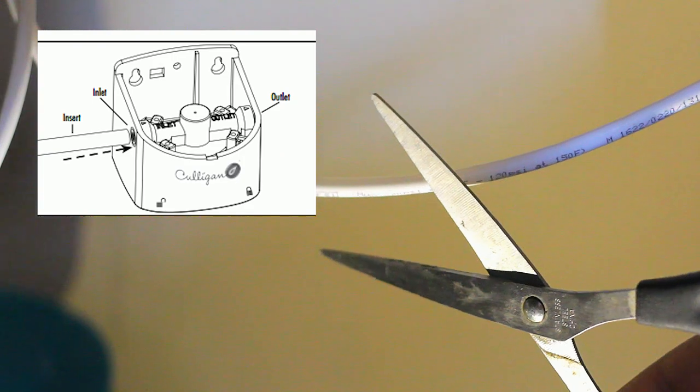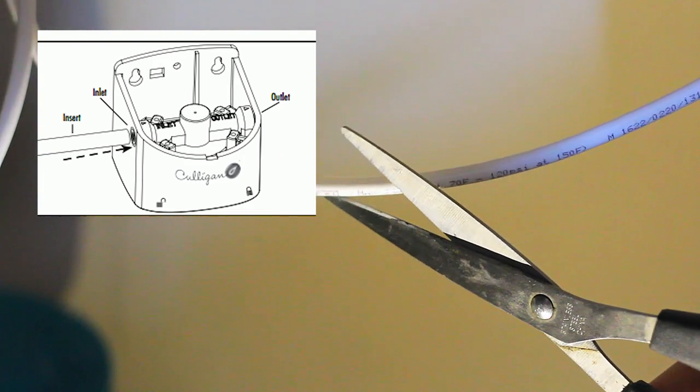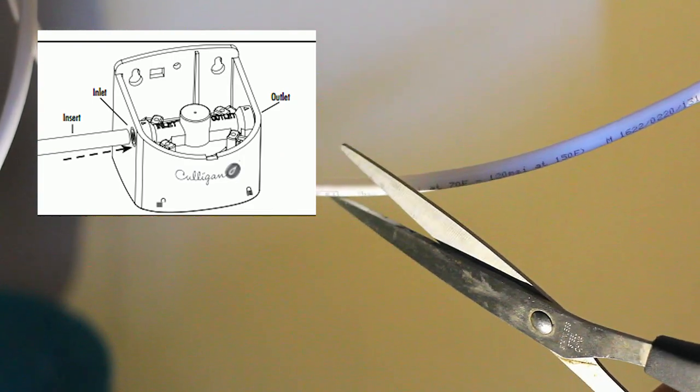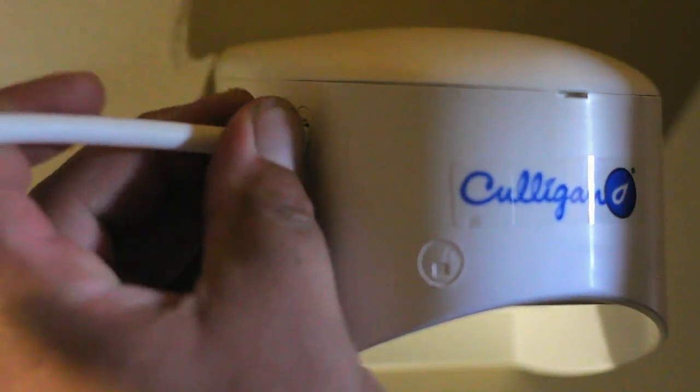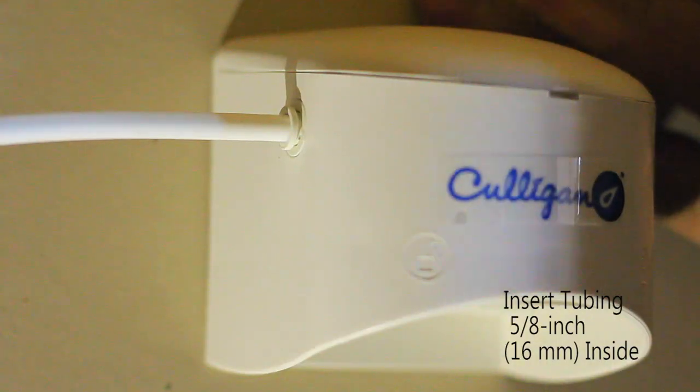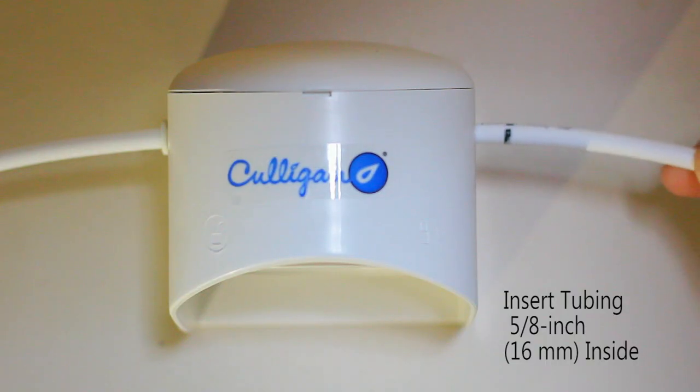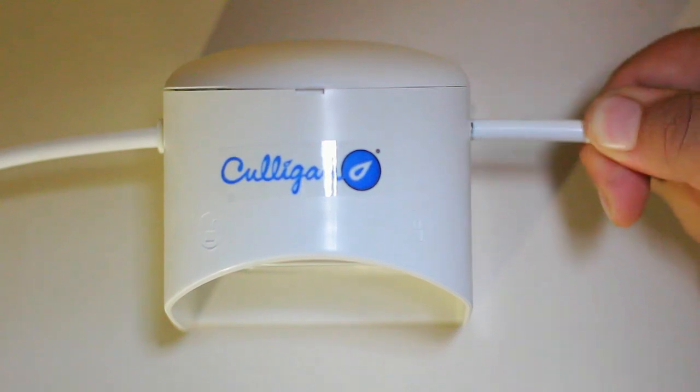Now we're going to measure the plastic tubing from the T to the filter's home to make our first connection. Once we do that, we can proceed to cut the tubing and insert it on the left side of the filter's home. Now we're going to take our remaining tubing and connect it on the right side.